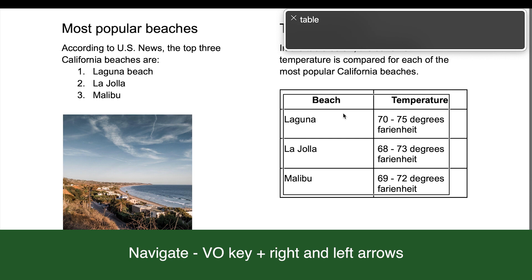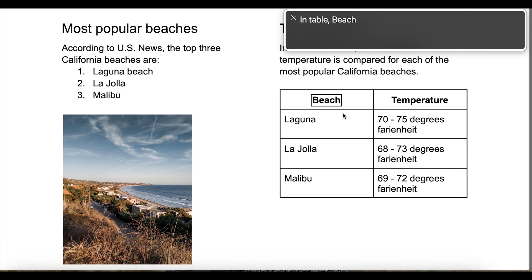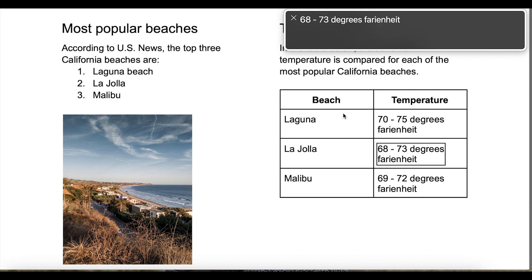VoiceOver announces: 'To begin, into the table — you are currently on a table inside of a page. In table: Beach, Temperature, Laguna, 70 to 75 degrees, La Jolla, 68 to 73 degrees, Malibu.' The table doesn't announce the Beach and Temperature headers as I navigate the cells, so I'd need to make Beach and Temperature table headers in my PDF's tags.